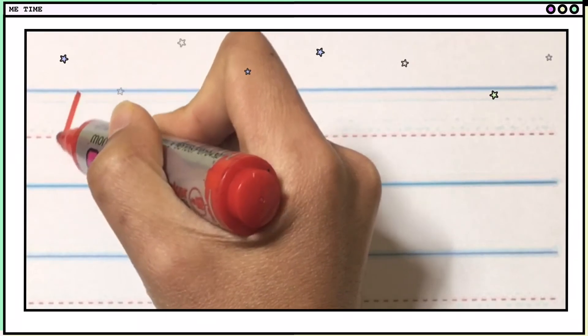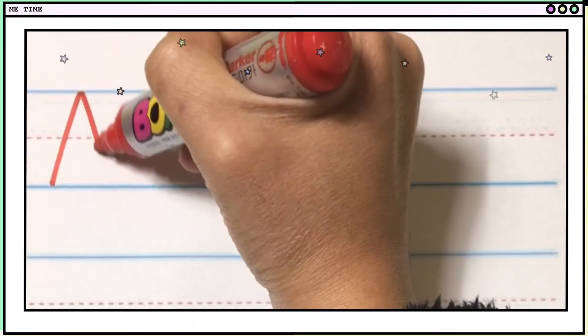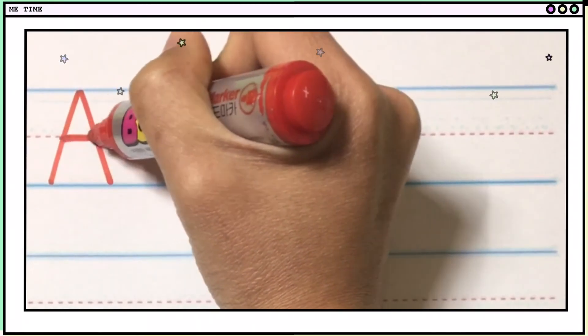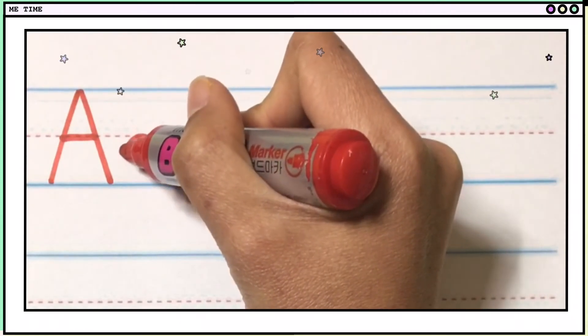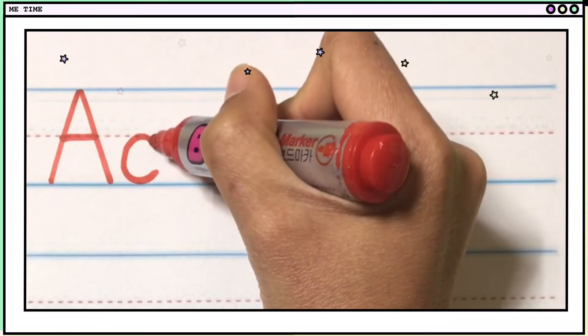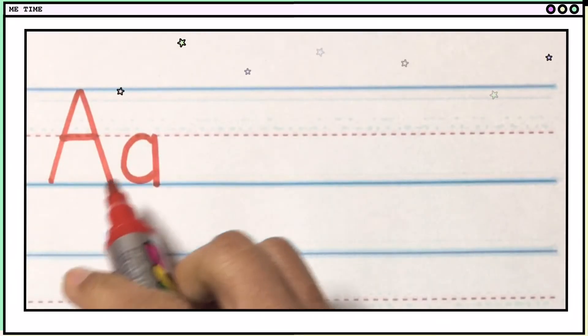Okay, put one line. One, two, three. Okay, small letter A. You start with a small C and then one line. So, big A, small A.